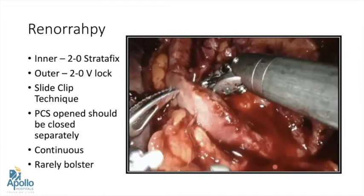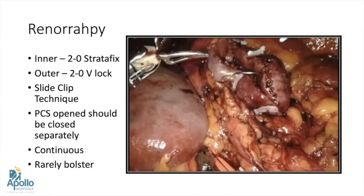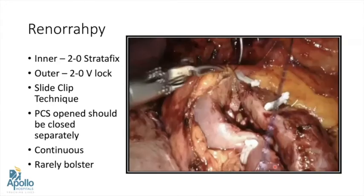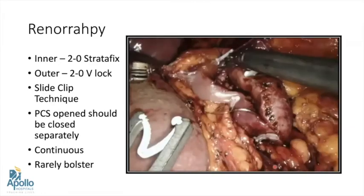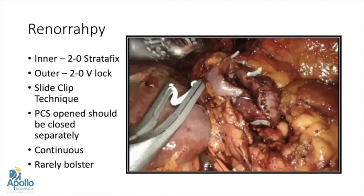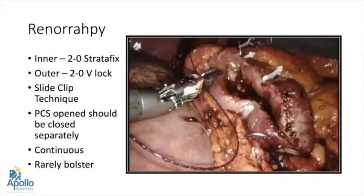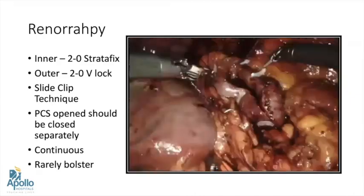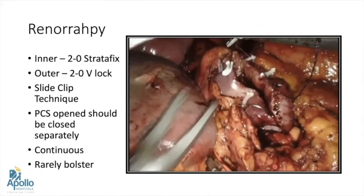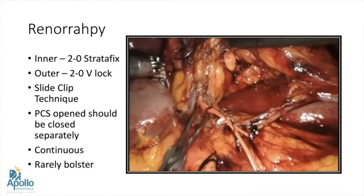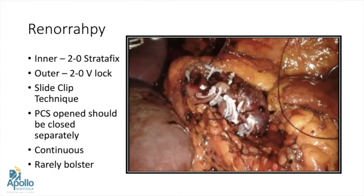For the inner renorrhaphy, I start with a continuous suture where the medulla is sutured. If the PCS system is open, it is sutured individually. Sutures are tied using the sliding clip technique in a continuous manner. The outer layer renorrhaphy is done with 2-0 V-lock suture in continuous method. Once done, the clamp is removed and the kidney observed for at least five minutes, decreasing intraperitoneal pressure to check for bleeding — this is very important to reduce chances of postoperative hemorrhage.